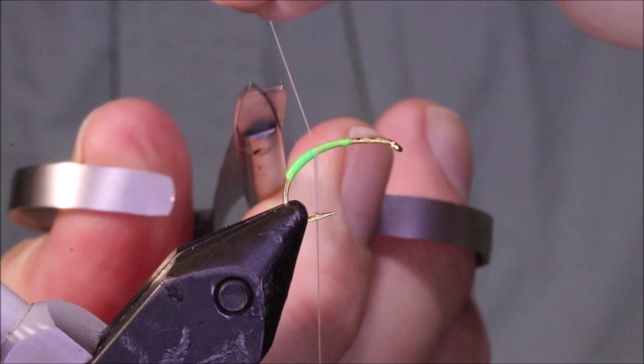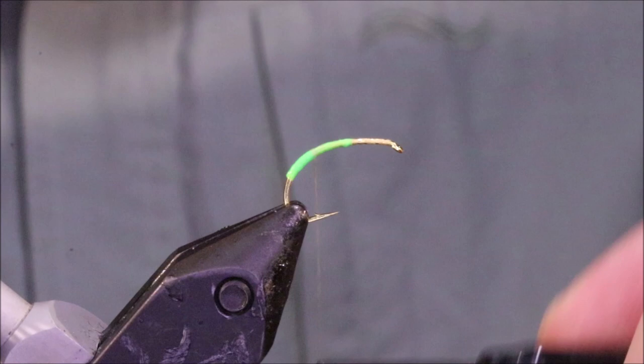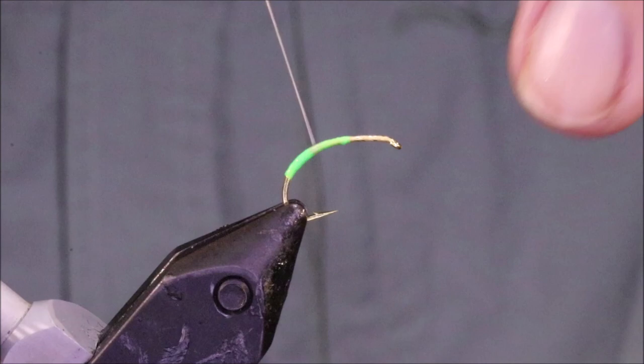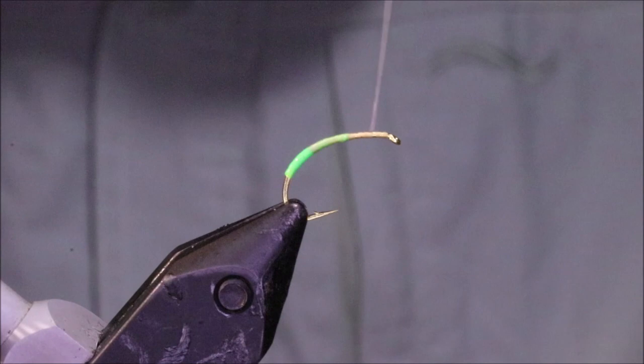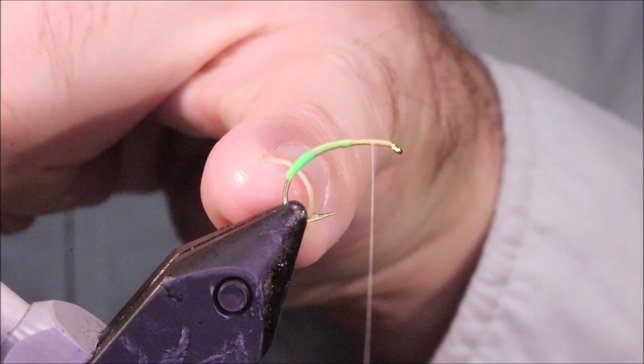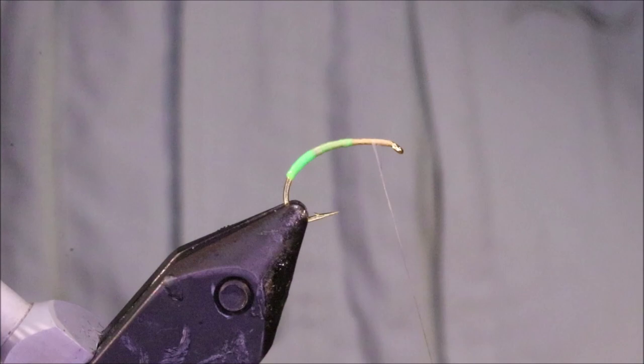So starting some base thread. As I said, this is 70 Denier Danville. I think Colin uses GSP, but whatever's fine. I'm going to run on a base, a very pale tan, something like that, from the eye to the end of the shank in line with the barb.